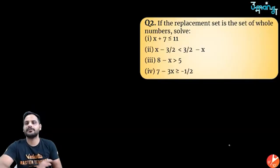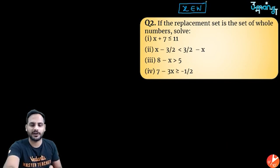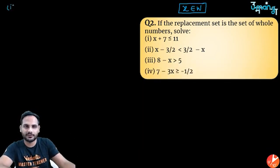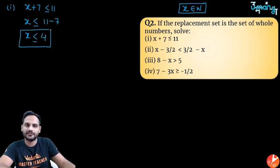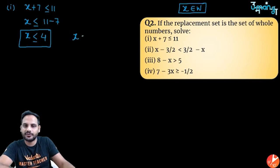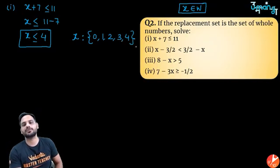Question 2, replacement set = whole numbers. Part (a): x + 7 ≤ 11. Shift 7: x ≤ 11 - 7 = 4. So x ≤ 4. Since x belongs to whole numbers, possible values are x = 0, 1, 2, 3, 4 — that's 5 values.